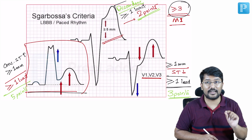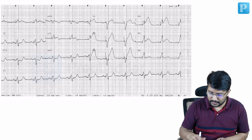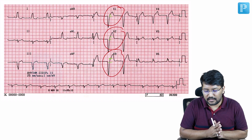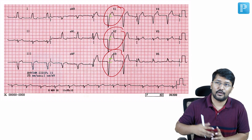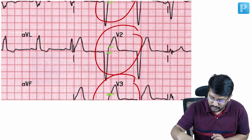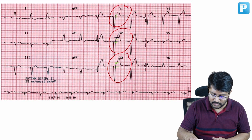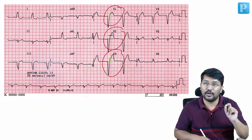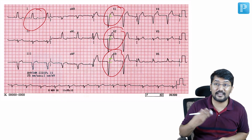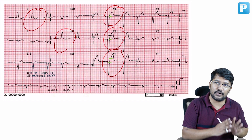Concordant ST elevation and concordant ST depression have a very high value. Now let us go back to the first ECG and see if it fits. Do we see any lead with ST elevation other than V1, V2, V3? No. In V1, V2, V3 we are talking about discordant ST elevation, and none of these leads actually have ST elevation of more than five millimeters. Straightforward — this is left bundle branch block. There is no concordant ST elevation and no concordant ST depression, only discordant changes. This is a simple ECG of left bundle branch block.